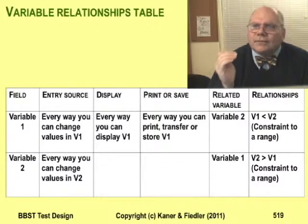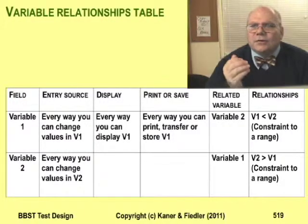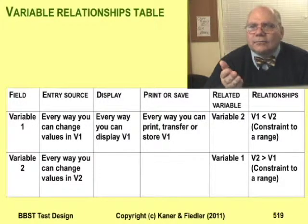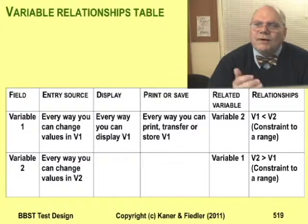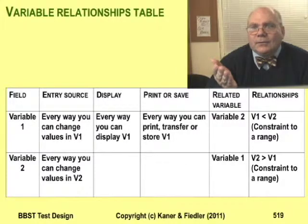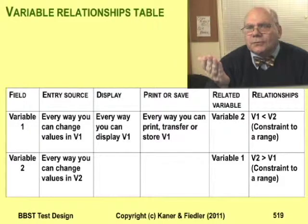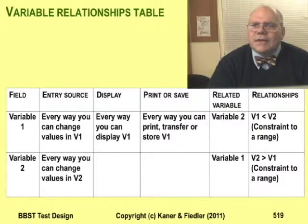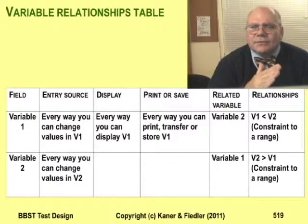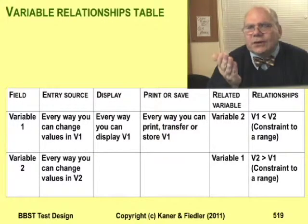The next columns ask where you can display, print, transfer, or store the variable — list them all. Now consider relationships. What variables are related to variable 1? Of course, we know about variable 2, so list it. Are there any others? If so, list them too.